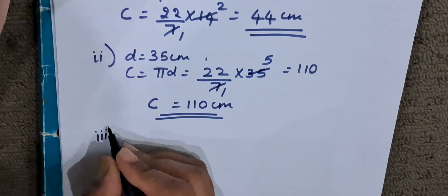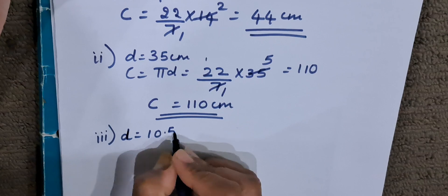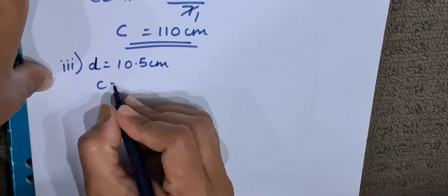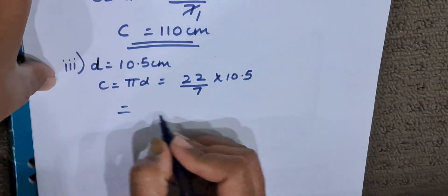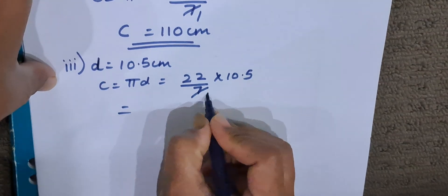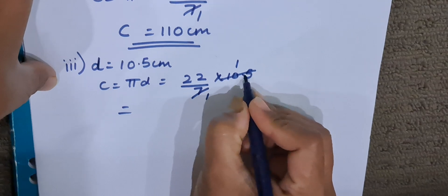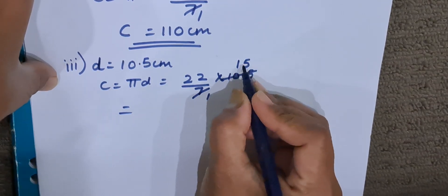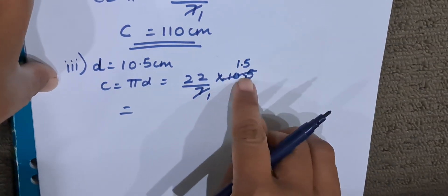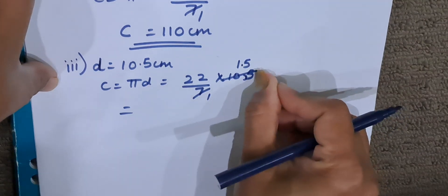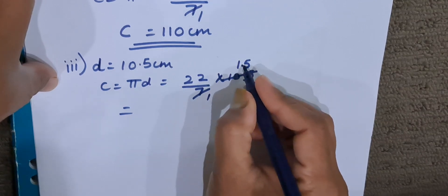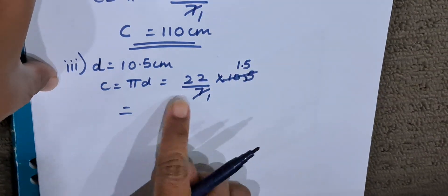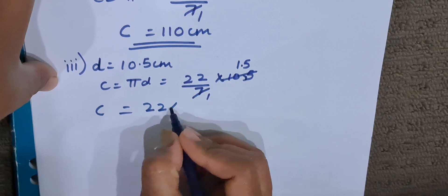Now let us solve the third one. If the given diameter is 10.5 centimeters, what is the circumference of the circle? C = πd = 22/7 × 10.5. We simplify 10.5 divided by 7: 7 ones are 7, remainder 3; 7 fives are 35. We place the decimal point after one digit from the right-hand side, so 10.5 ÷ 7 = 1.5. So we have circumference = 22 × 1.5.